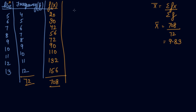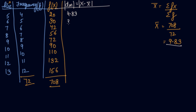Now you take the deviation from mean: |X minus X̄|. Your X̄ is 9.83 and your X series values give deviations: 5 minus 9.83 is 4.83, then 3.83, 2.83, 1.83, then 0.17, 1.17, 2.17, and 3.17.